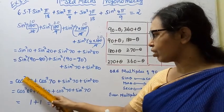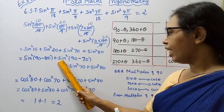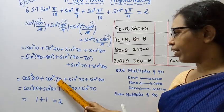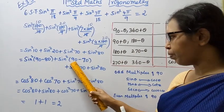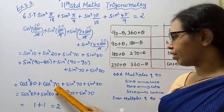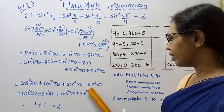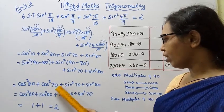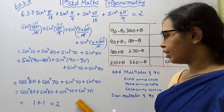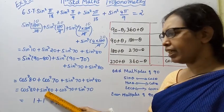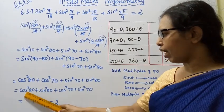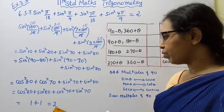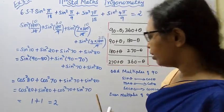Cos square 70 plus sin square 70. Cos square 80 plus sin square 80. Cos square theta plus sin square theta equals 1. So 1 plus 1 equal to 2. Hence proved.